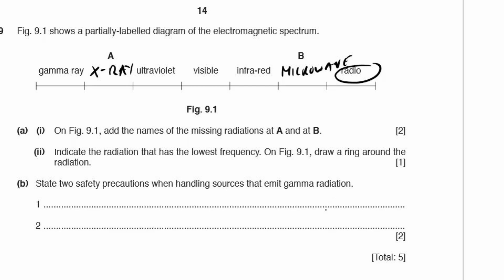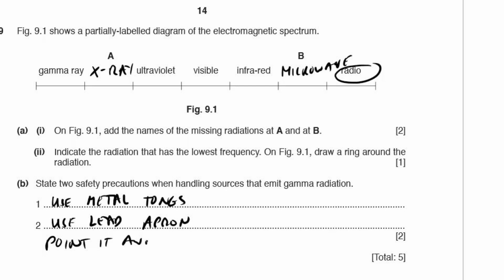Part B: state two safety precautions when handling sources that emit gamma radiation. Safety precaution number one: use metal tongs. Use a lead apron. If it has a direction, point it away from you. You wouldn't want to be in the same room as a gamma emitter if you have an option.